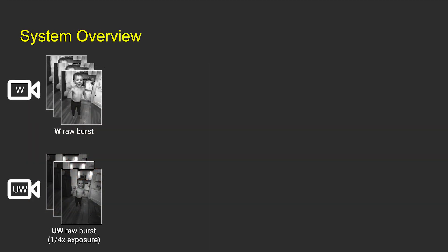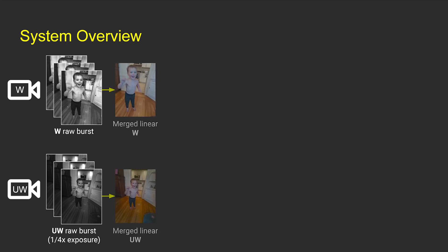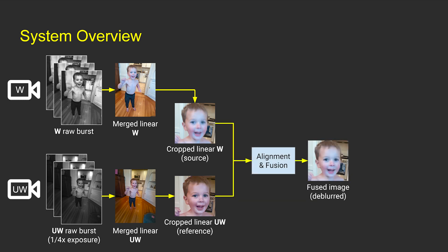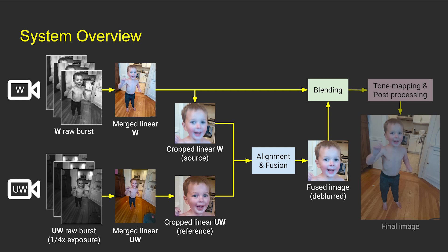Our system captures raw bursts from both wide and ultra-wide cameras. We first merge raw bursts into linear raw and crop the face from both the wide and ultra-wide images. We then apply deep CNNs to align and fuse the cropped faces for de-blurring. After fusion, we blend the de-blurred face back to the wide image and apply post-processing steps such as tone mapping to output a clear and sharp image. Next, we will explain the details in the alignment and fusion step.